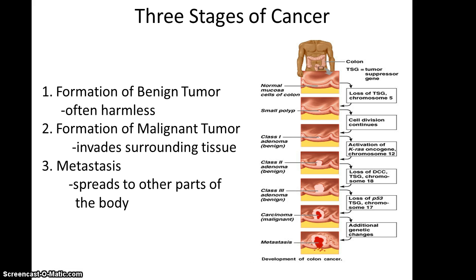It's worth pointing out that researchers have determined this because different kinds of cancers have different features. So it's possible to tell the difference between, say, brain cancer originally located in the brain versus testicular cancer that is now located in the brain because of metastasis.